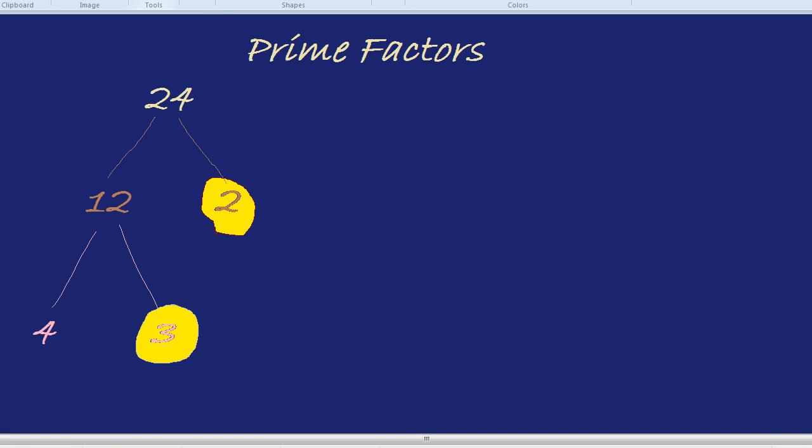We need to split 4 up again until we get to only prime numbers. 4 is 2 times by 2. 2 times by 2. They are both prime numbers, as we've seen. So if we circle that and circle that, we have our last two prime factors of 24.